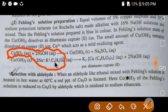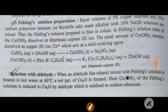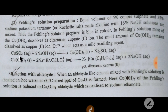Now we will understand how to prepare Fehling's solution. When you add copper sulfate to an alkaline solution of sodium potassium tartrate, at first copper sulfate will react with sodium hydroxide.